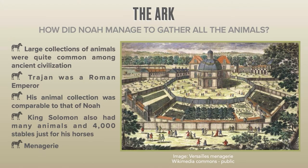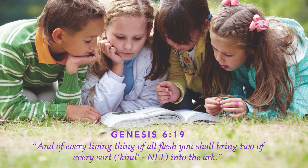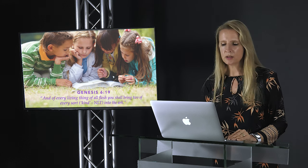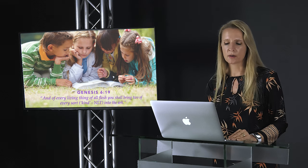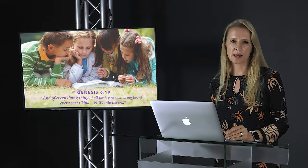Having large animal collections was quite common among ancient civilizations. For example, Trajan, a Roman emperor, had an animal collection comparable to that of Noah, including domestic and wild animals. King Solomon also had many animals and even 4,000 stables just for his horses. These animal collections are called a menagerie. According to Genesis 6:19 and 7:2, God told Noah to gather the animals. Noah could have used hired help or servants to gather them, just as emperors did centuries later.